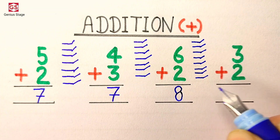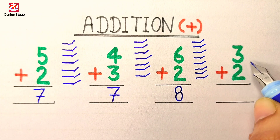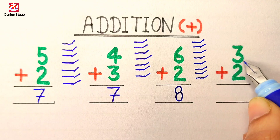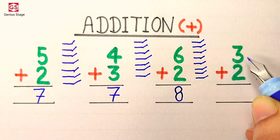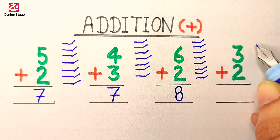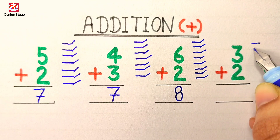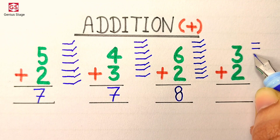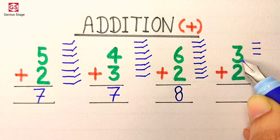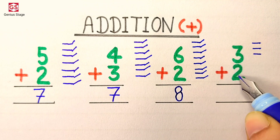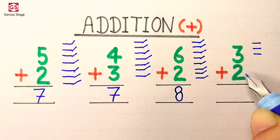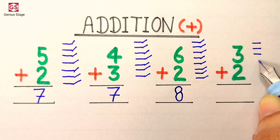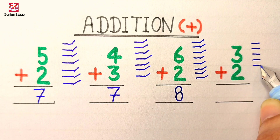In the fourth question, we need to add 3 to 2. So first we will draw 3 lines: 1, 2, 3. Below the 3 it says 2, so we will draw 2 more lines: 1, 2.